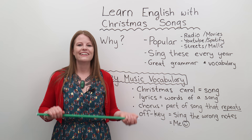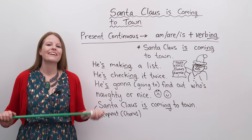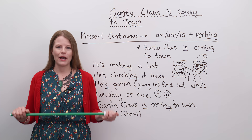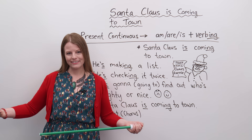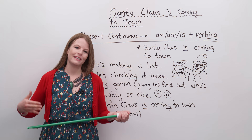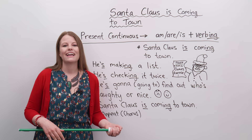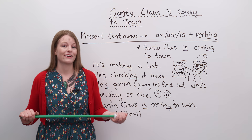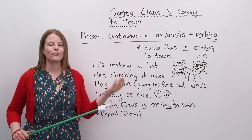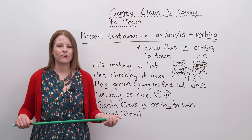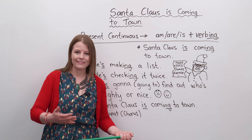So our first song is 'Santa Claus is Coming to Town.' Santa Claus is a character who wears red. He has a red hat, a white beard, and he tends to be a fat, happy man. On Christmas, he goes to different houses and gives presents to little children. I love this song because it uses the present continuous grammar tense. The present continuous is one of the first grammar tenses students learn, so this is a great song for beginner, intermediate, and advanced students.